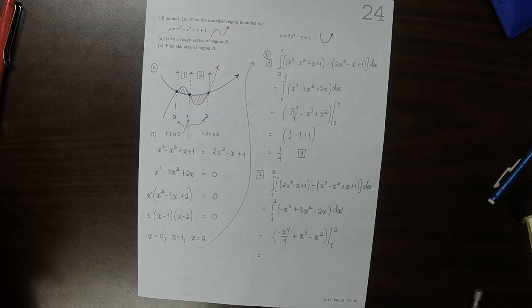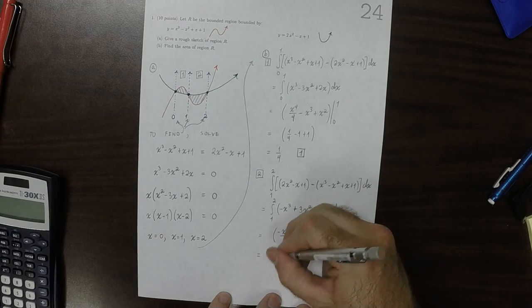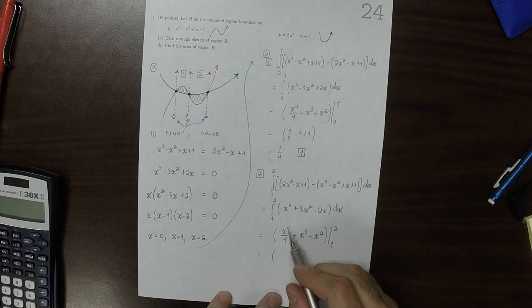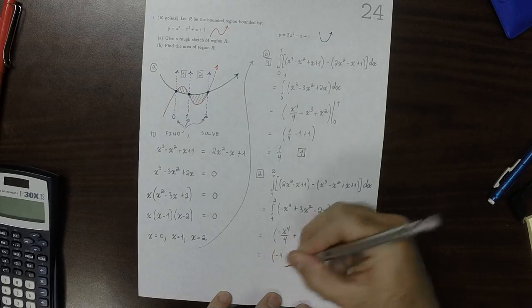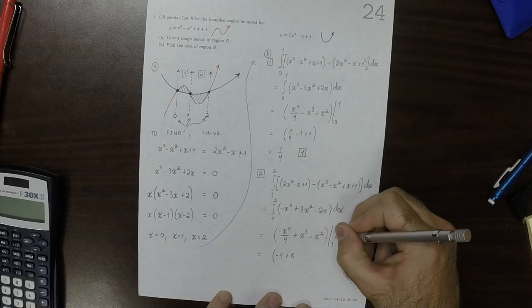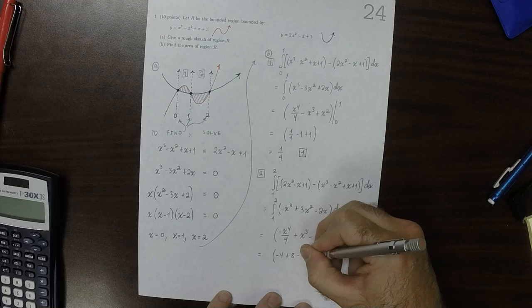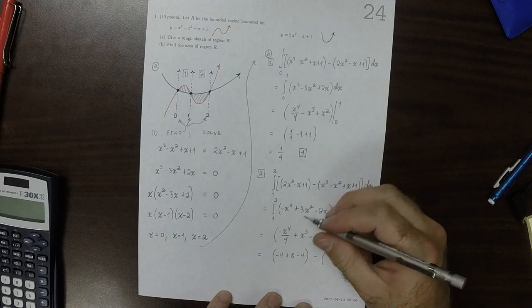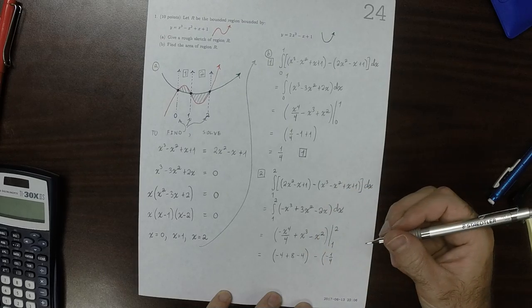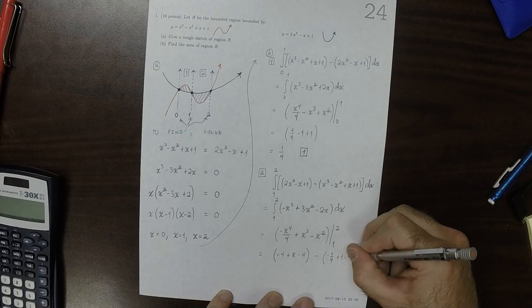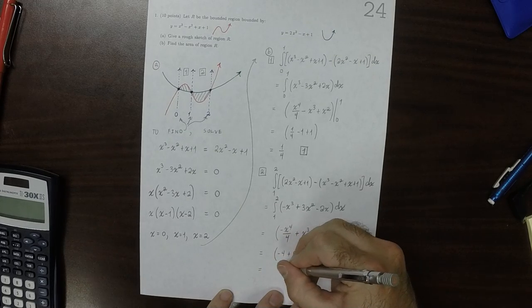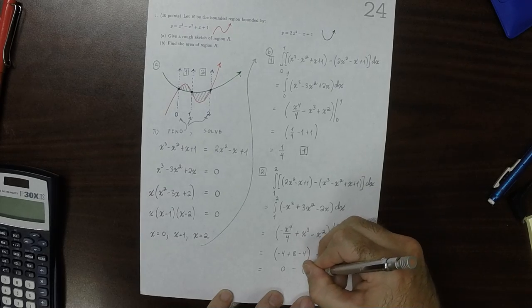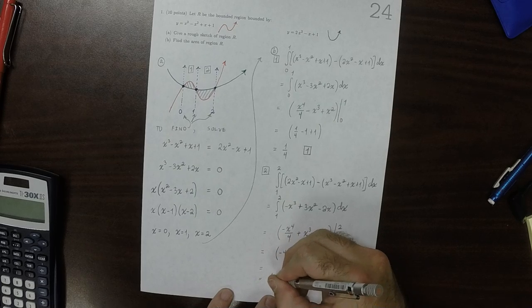So let's plug all that in. I can do that with my hand. So plug in 2: 2 to the 4 is 16 over 4 is 4, so that'd be negative 4 and then plus 8 and then minus 4. So that would be 0 minus negative 1 fourth plus 1 minus 1. So that would be 0 minus negative 1 fourth. So that's 1 fourth. So that's interesting.